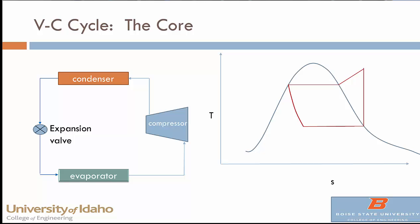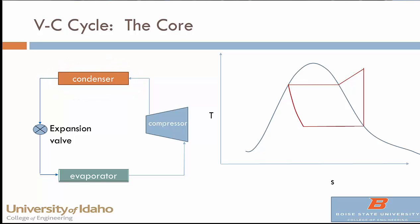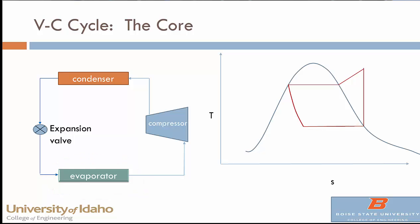The core of these systems is the vapor compression cycle. There are four main components. The compressor takes the refrigerant in the vapor phase to very high pressure and hence high temperature, sending it to the condenser where heat is rejected and the vapor condenses to a liquid. When you expand the liquid through a throttling valve, it gets very cold and exits as a mixture within the saturation region. That goes through the evaporator, where it absorbs heat at very low temperature and evaporates back into a vapor phase to go through the cycle again.